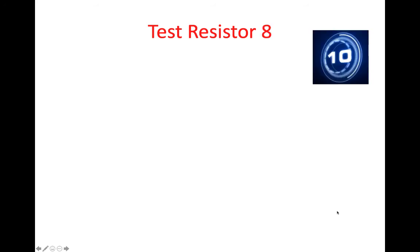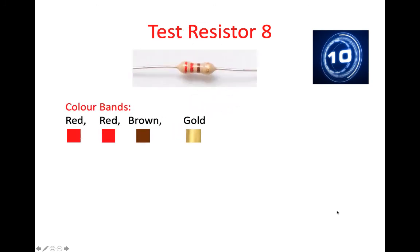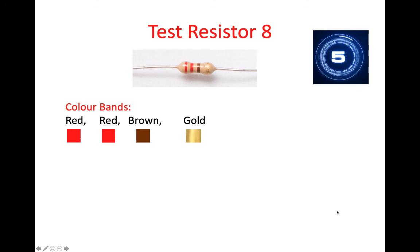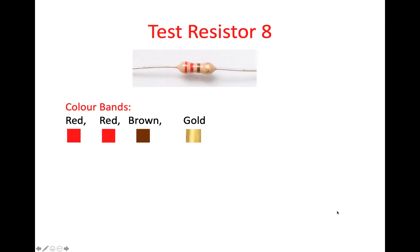And the final test resistor — test resistor eight. We are given red, red, brown, and gold. The first digit of the resistance value is red, so it has the value 2. The second digit of the resistance value is also red, so it's 2. And brown has a multiplier value of 1, because brown represents 1.